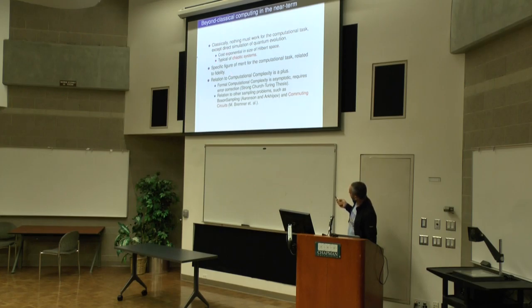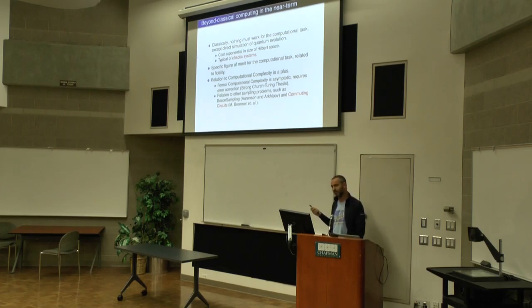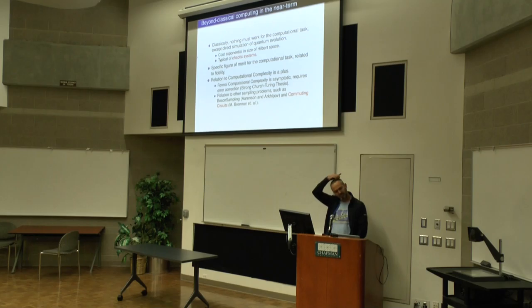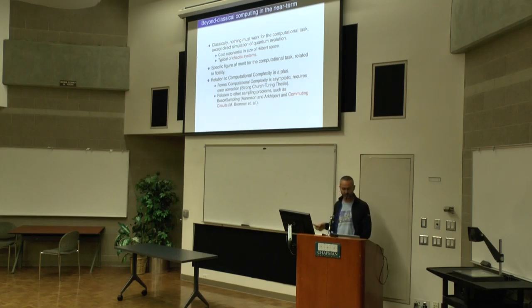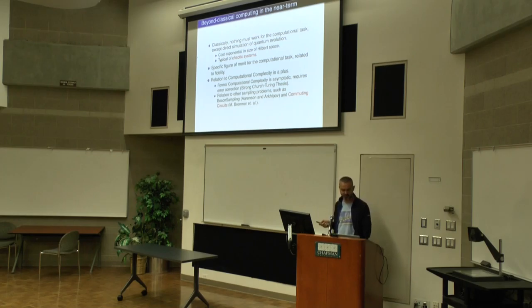With 50 qubits, the cost of a direct simulation is exponential in the size of the Hilbert space. You have 50 qubits — that's 2 to the 50 — you don't have enough RAM to simulate this in a supercomputer. So that's the first idea: we're focusing on trying to do a quantum chaotic evolution, which is going to be expensive because it's expressed in Hilbert space, which is exponential.